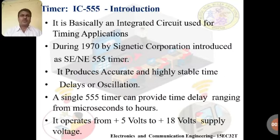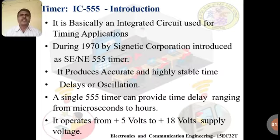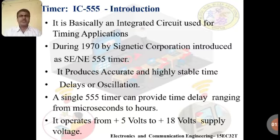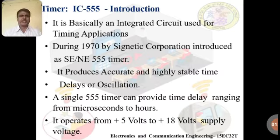Now we will see the introduction to the 555 IC. It is basically an integrated circuit chip used for timing applications. During the year 1970, it was manufactured by Signetics Corporation and introduced as the SE/NE 555 timer. It produces accurate and highly stable time delays and oscillations. A single 555 timer can provide time delays ranging from microseconds to hours, and it can operate on a +5V to +18V supply.